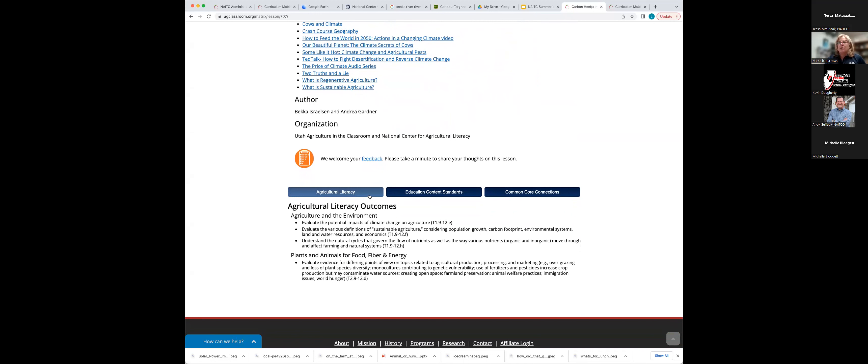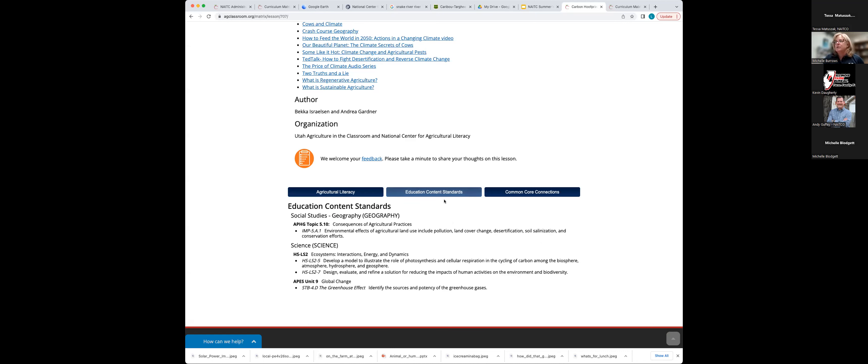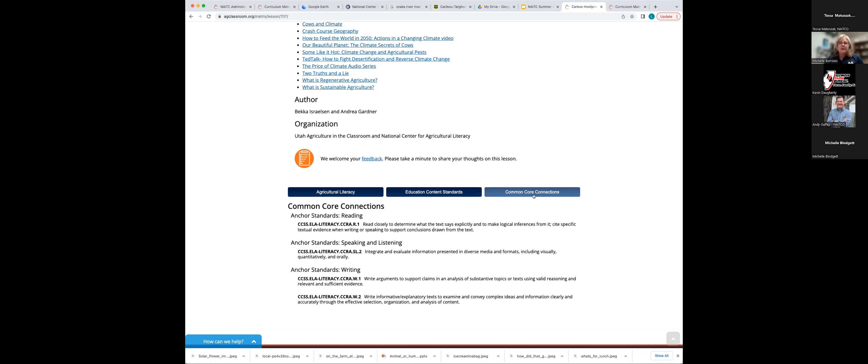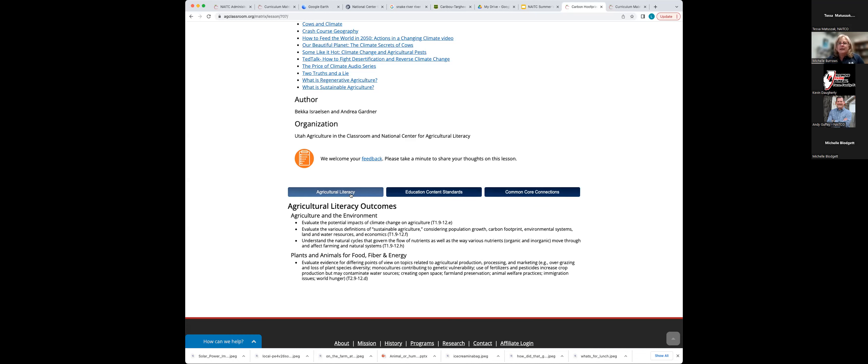At the very bottom, we have linked the lessons or we have identified the standards, the educational standards for that lesson. All of the lessons are linked to the agriculture literacy outcomes, which are a broad standard for agricultural literacy. But then we also have education content standards. So different topic areas or content areas like science or geography, potentially family consumer science. Those kinds of lessons will meet those standards as well. And then we have common core standards that we connect the lessons to. In some cases, your individual state may also have the state standards connected to these lessons as well. So that would show up here.